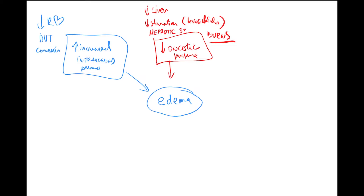These are generalized, gravity-dependent edemas. In these cases, you'll also see edemas in soft tissues, especially on the face — called periorbital edemas. These are also gravity dependent because you mainly see them in the morning, after lying down all night when water accumulates in the face.